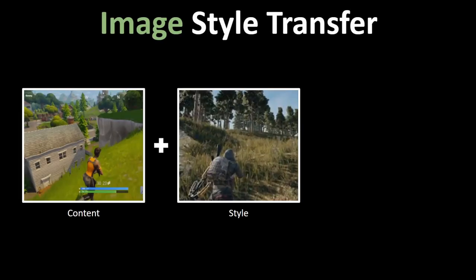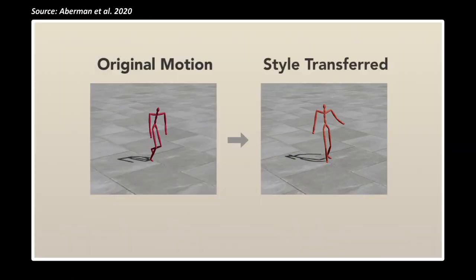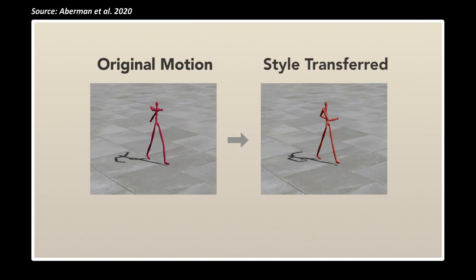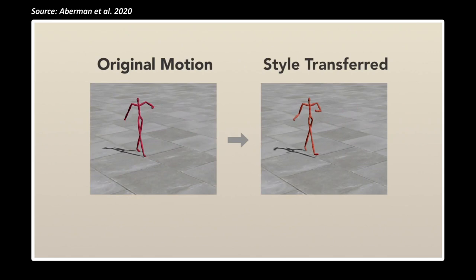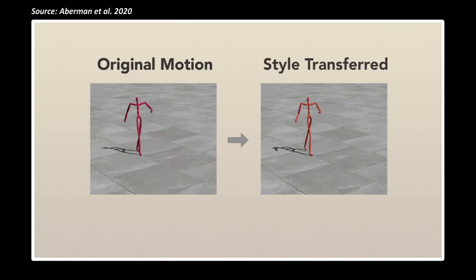Unpaired image style transfer is a popular technique in computer vision where we take the content from one image and the style from a completely different image to produce a combined output. Today I want to share an AI that also does style transfer, but not for images — this AI performs style transfer for the motion of 3D characters.